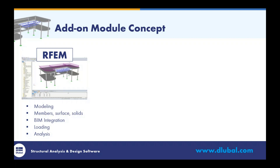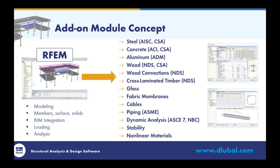If we want to do design within RFEM, we utilize add-on modules. We have steel, concrete, wood, aluminum, cross-laminated timber, glass design for single layer laminated and insulated glass, fabric form finding for tensile fabric structures, and cable elements — because we are a nonlinear analysis program. The nice thing about these add-on modules is you don't have to purchase all of them — you purchase only what you use for your projects. That keeps the software affordable and catered to your individual design needs.